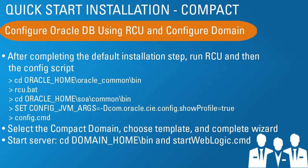Finally, the compact option. Here we need to configure an Oracle database using the RCU utility, and then configure the domain. After the default installation step, run RCU — the Repository Configuration Utility. Go into Oracle common bin and execute the RCU.bat file; there are screens to fill out specifying the schema, passwords, and related settings. Then go into SOA common bin, set the JVMRG environment variable to indicate you want the compact domain option, and run config.command.